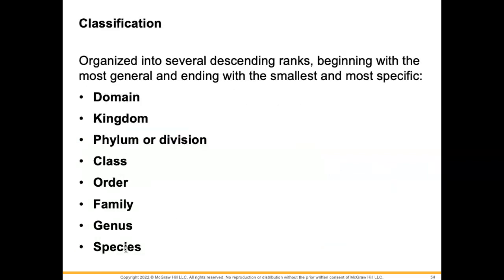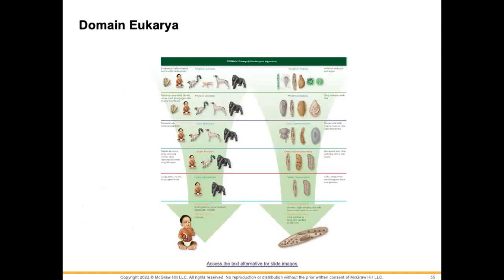Make sure you know the classification levels in order: domain, kingdom, phylum (also known as division), class, order, family, genus, and species. When we classify different organisms, we do so using descending ranks. There is an image in your textbook that illustrates this — it has some interesting information worth reviewing.